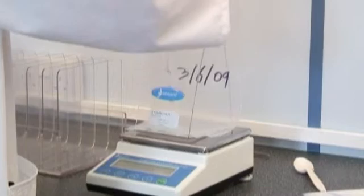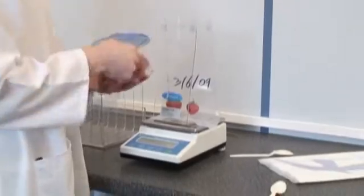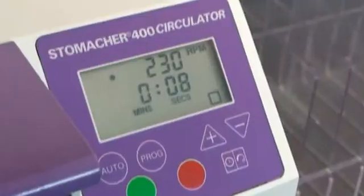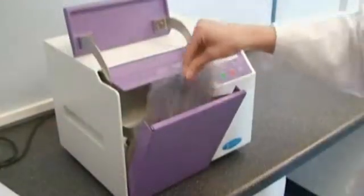The Stomacher 400 circulator and wide range of accessories is capable of processing a large variety of food samples for analysis, such as meat, seafood, vegetables, fruit, cheese and pastry. The patented circulator paddle design provides enhanced organism recovery with reduced debris production.